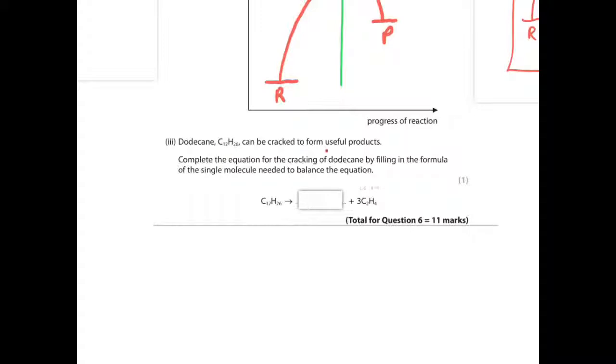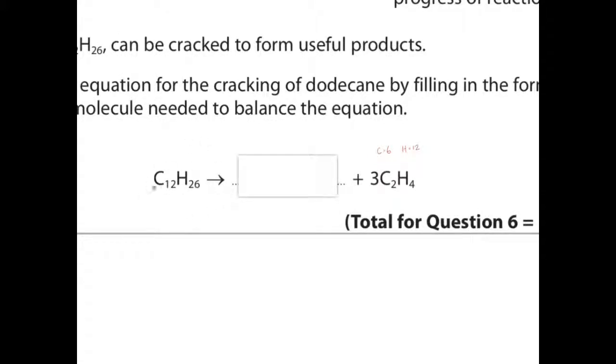Dodecane C12H26 can be cracked to form useful products. Complete the equation for the cracking of dodecane by filling in the formula of the single molecule needed to balance the equation. So if you remember the conservation of mass, basically whatever is present on this side in terms of number of elements of carbon and hydrogen, number of atoms, you'll find the same number of atoms on this side. So you have to work out what is missing. Here we have 6 carbons and 12 hydrogens. 3 times 4, 3 times 2. Here we have 12 carbons, so we're missing 6, and 26 hydrogens, so we're missing 14. So basically, we want C6H14, because this plus this will equal the number of carbons and hydrogens. Just take your time, and it's an easy mark. C6H14.